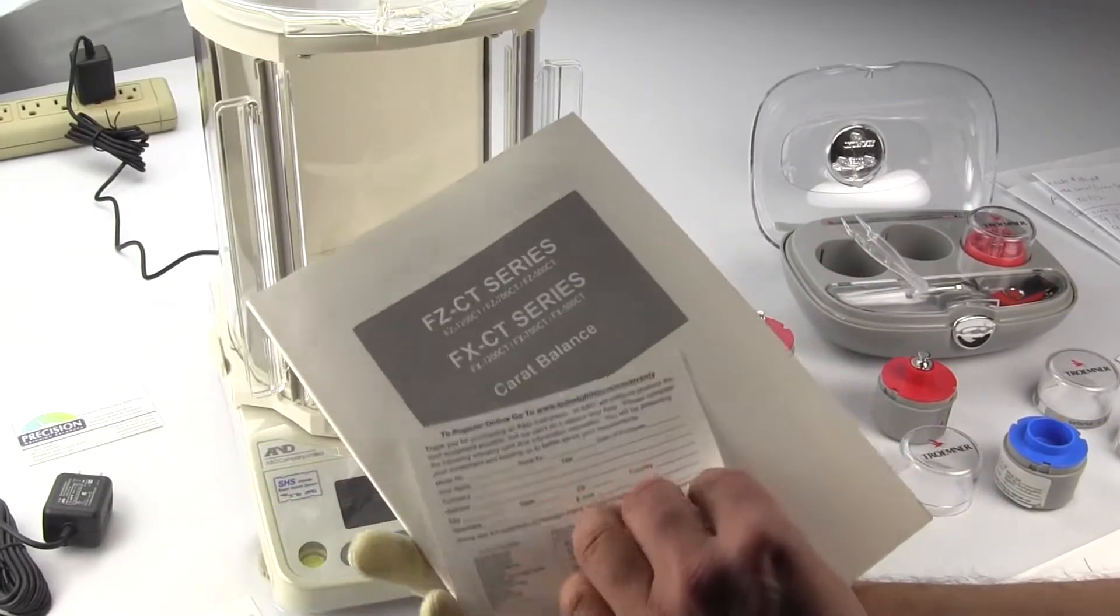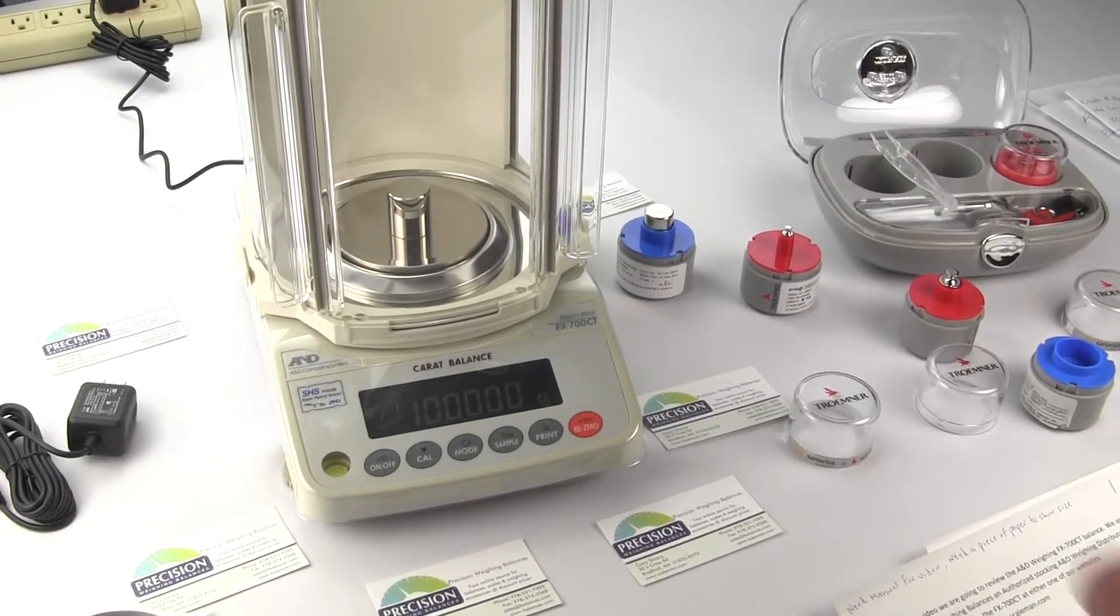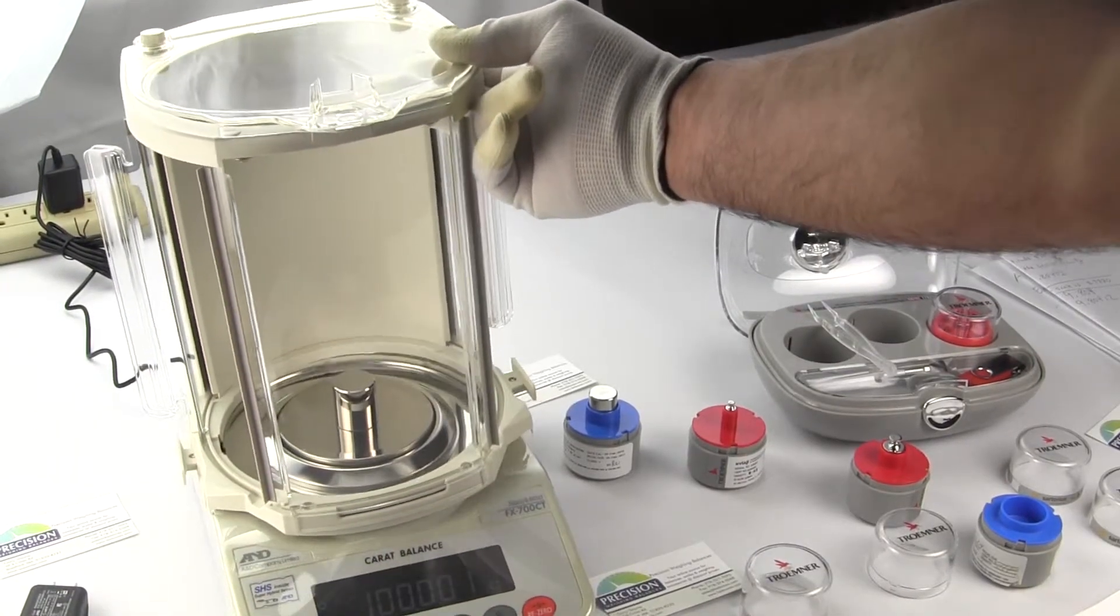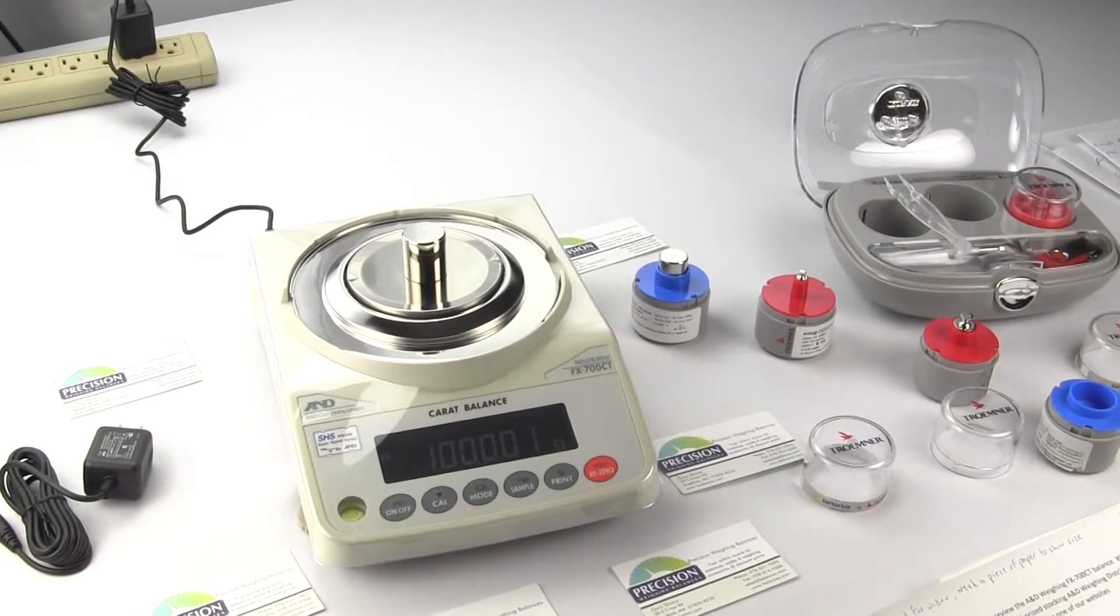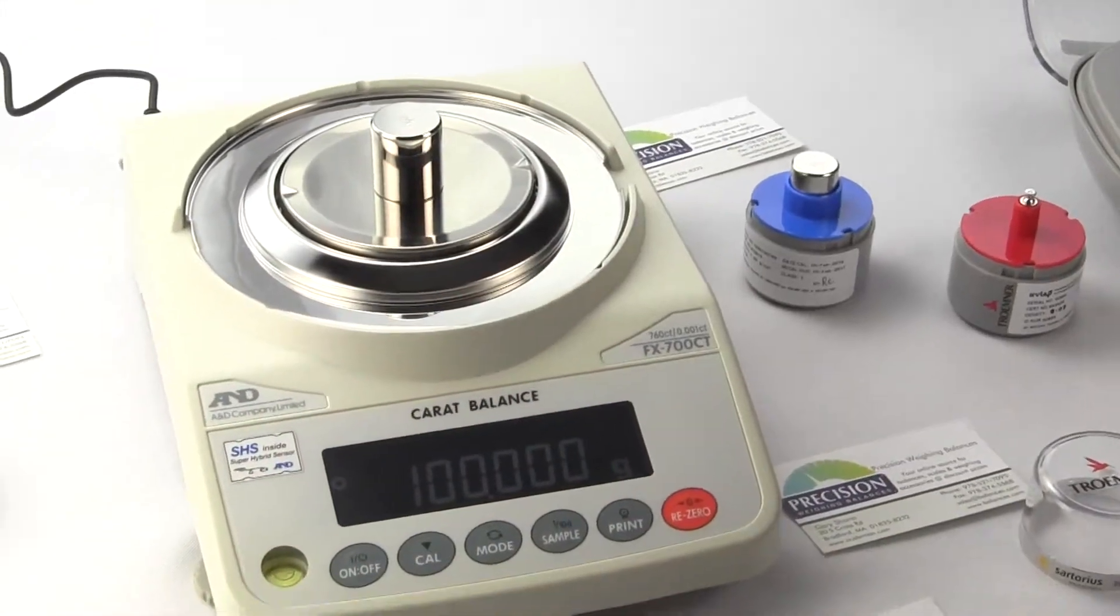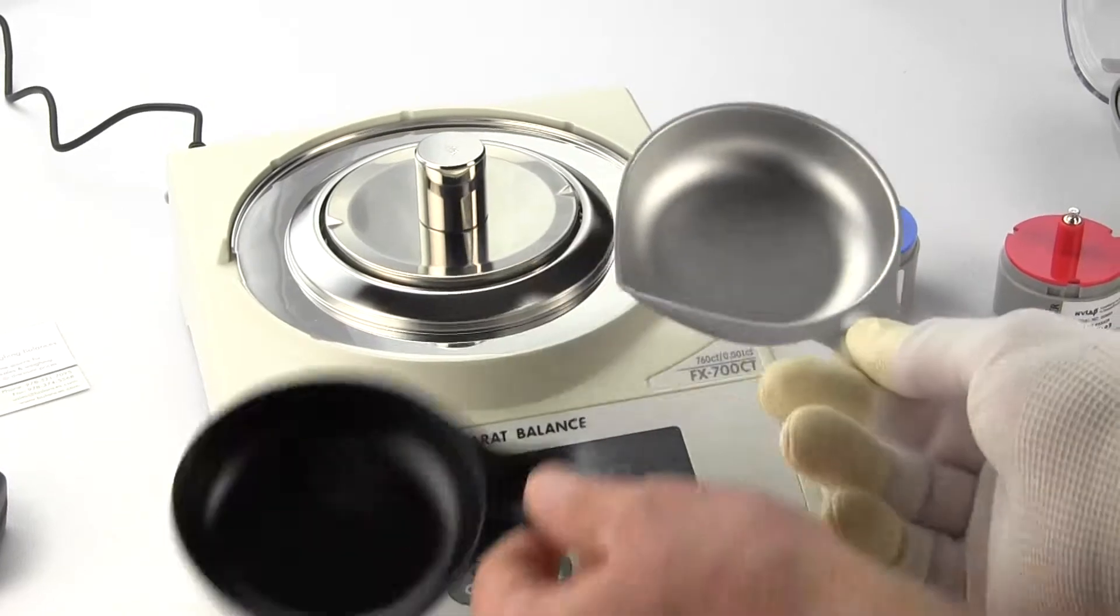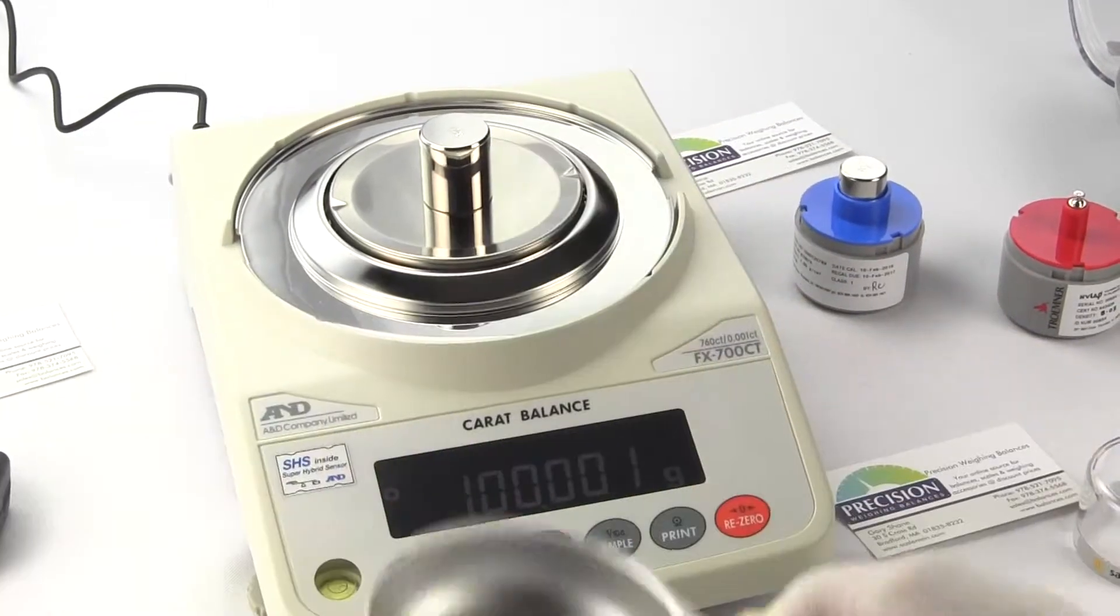You'll also receive a warranty card. There's a form-fitted plastic in-use cover so this draft shield can be removed. You just need to pop out the tabs so the draft shield comes off. This is an in-use cover. One comes standard with it all together. You also receive two gem dishes since this balance is really marketed to the jewelry industry. A&D supplies them with two gem dishes.